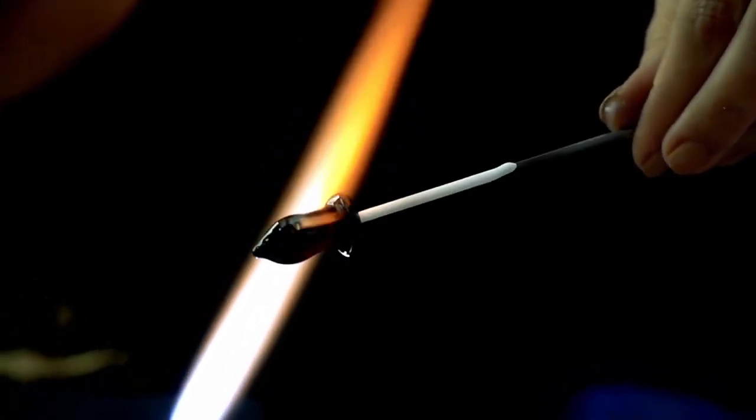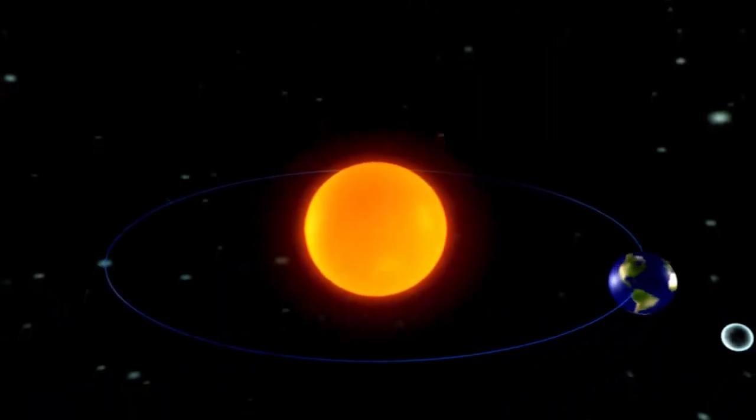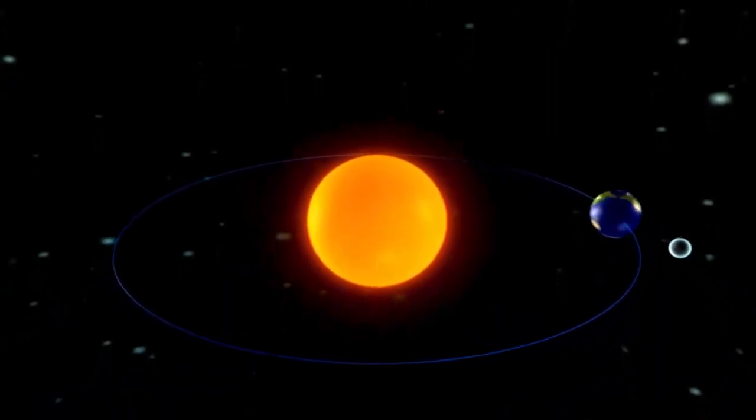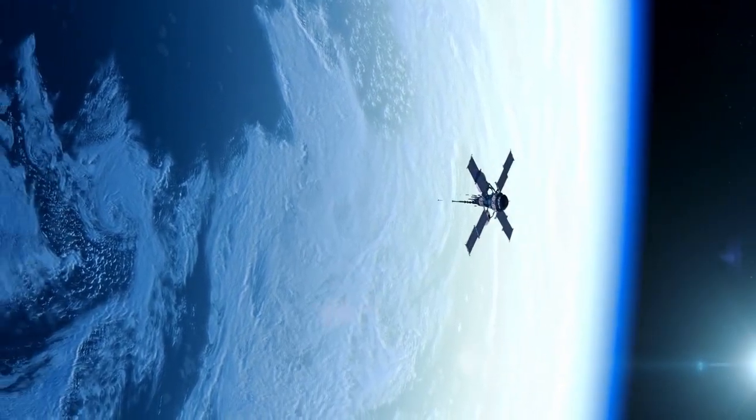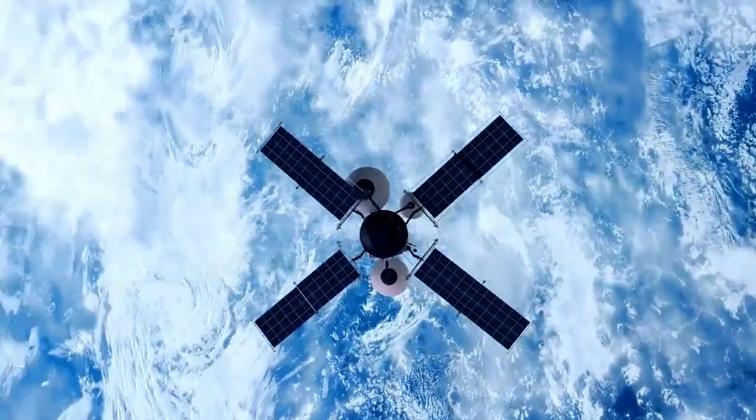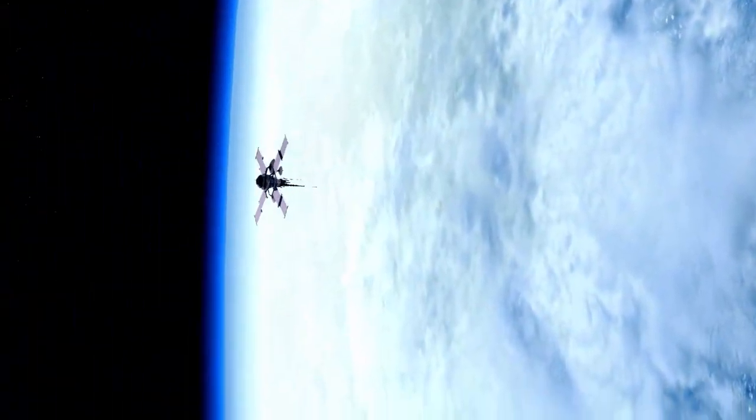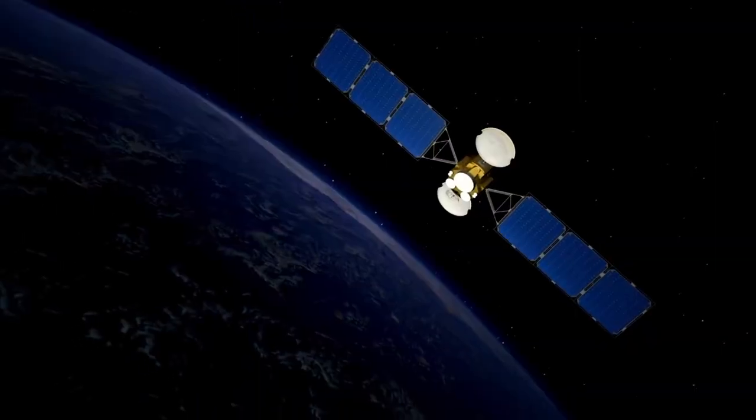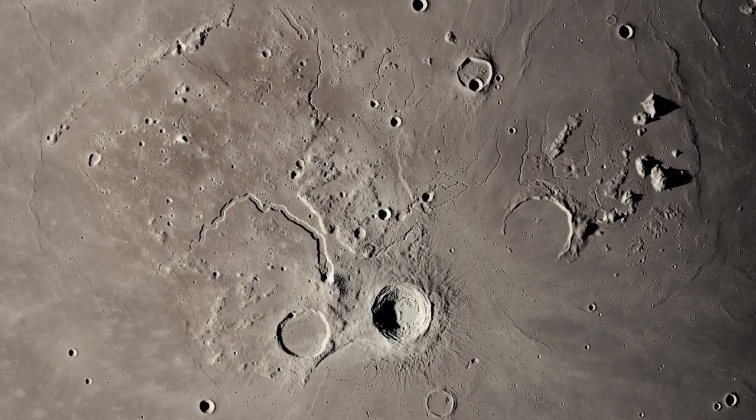Once classified as the ninth planet in our solar system, Pluto continues to captivate researchers and astronomy enthusiasts alike. Located in the Kuiper Belt, more than 3.6 billion miles from Earth, Pluto has always posed significant challenges to study. Previous telescopes, including those long-considered top-tier, could only provide faint and blurry glimpses of its surface.